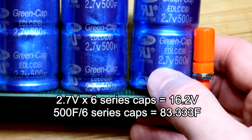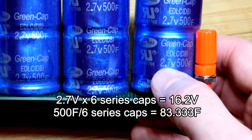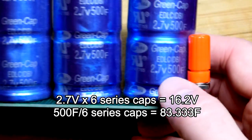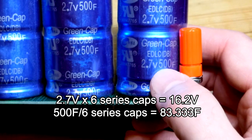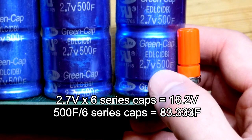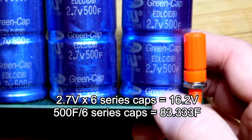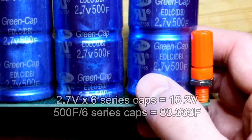If they stay balanced we will be able to charge the entire unit up to 16.2 volts instead of 2.7 volts, and the capacitance will go down though. Instead of 500 farad we will have somewhere around about 83 farad if they actually live up to that capacitance.